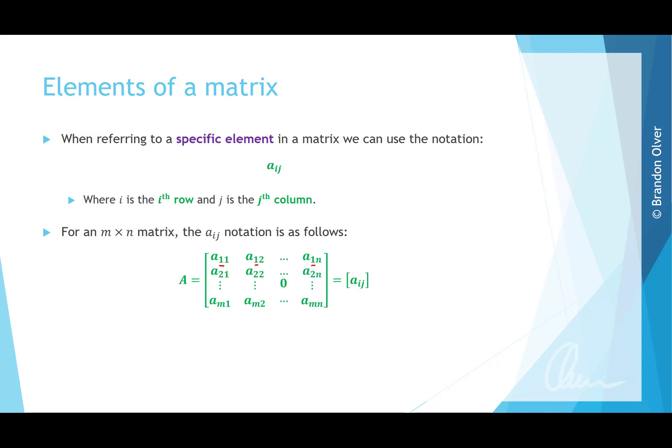The column number changes as we move across. So we have A row 1 column 1, A row 1 column 2, up to A row 1 column N — because there are N columns. Going down a column, the column number stays the same, and the row changes: A row 1 column 1, row 2 column 1, down to row M column 1, because there are M rows.